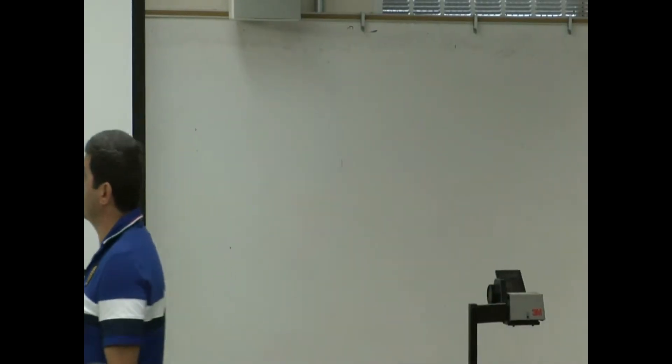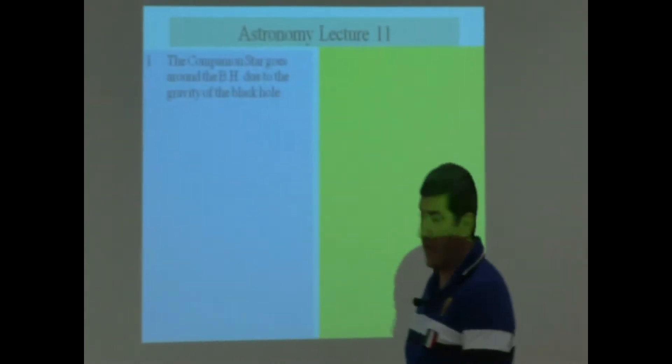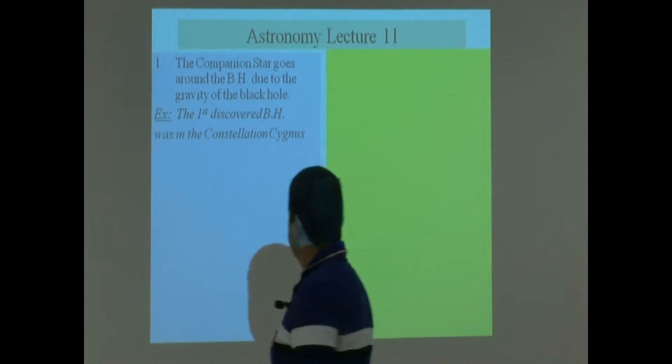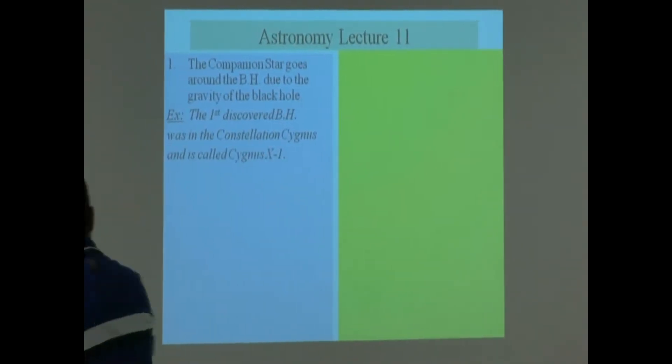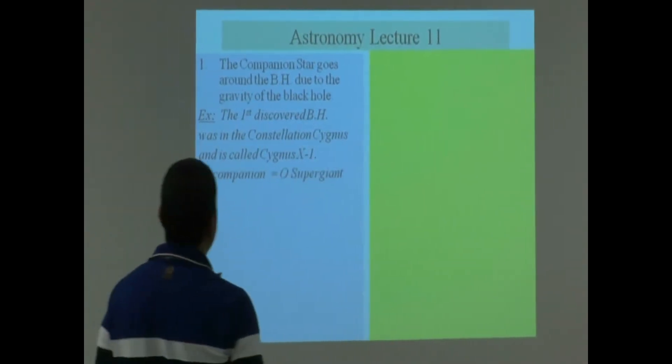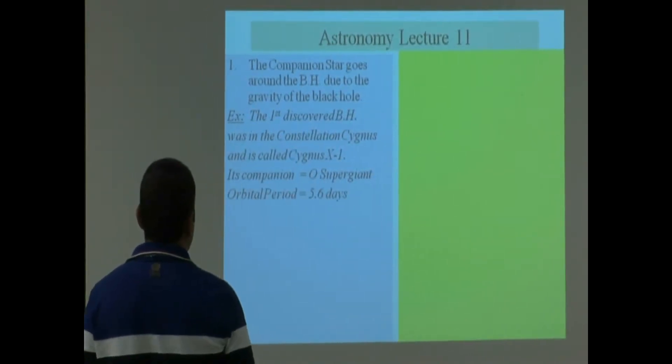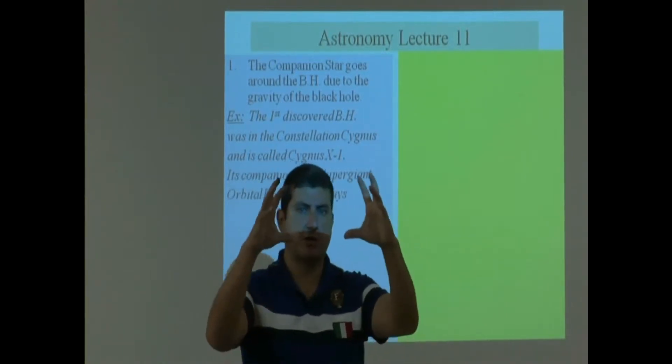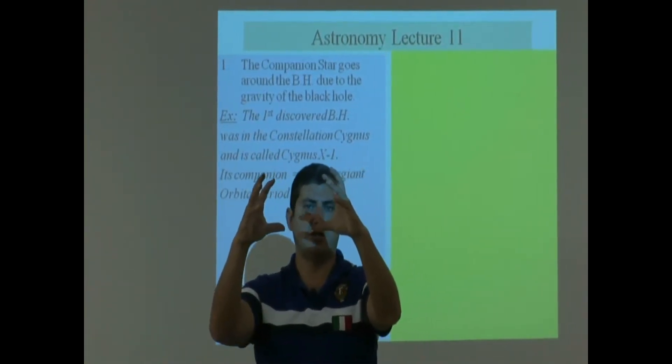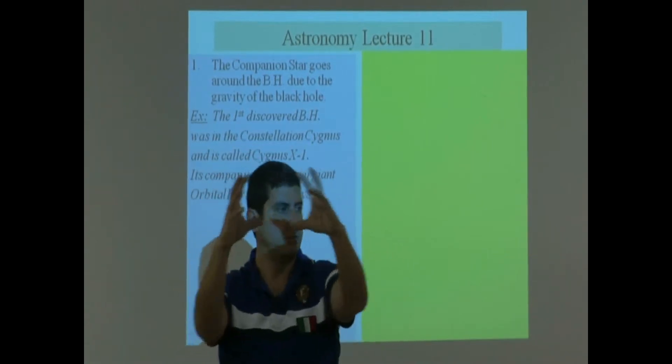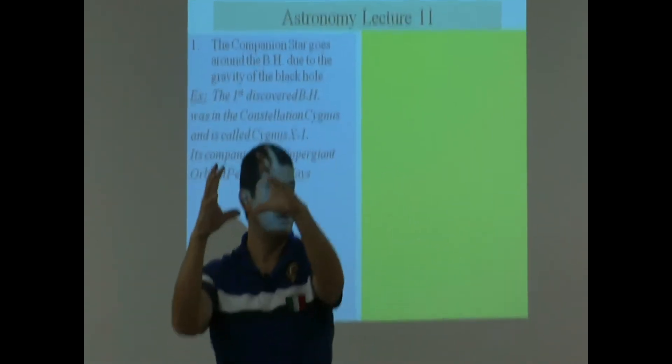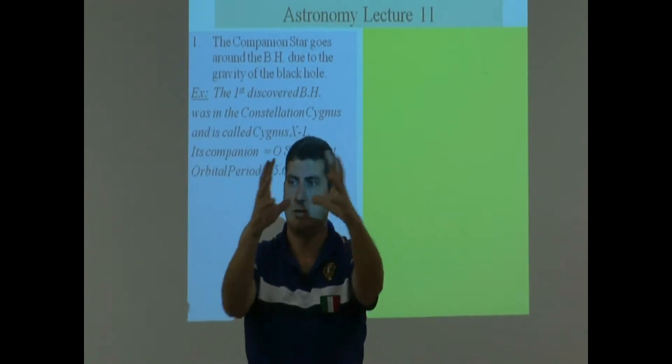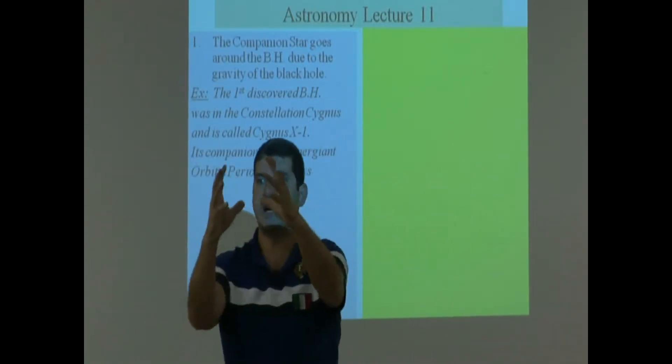So the companion star goes around the black hole due to the gravity of the black hole. It's pretty easy to envision this. Basically what's happening here is that you look out in space and then you see this huge star. This huge star is doing this, it's going like that. And then next to it you don't see anything. It's just black.